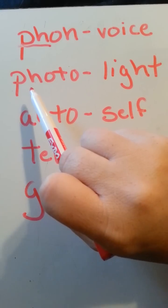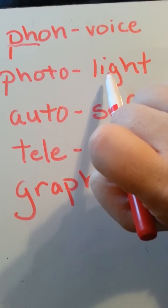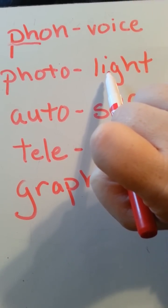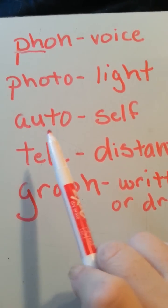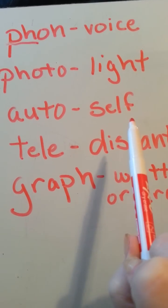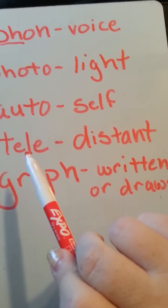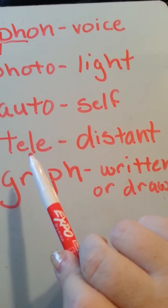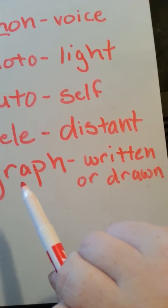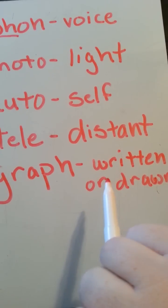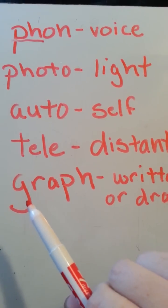Now, if you look at photo, it means light. Auto means self. Tele means distant. And graph is something written or drawn.